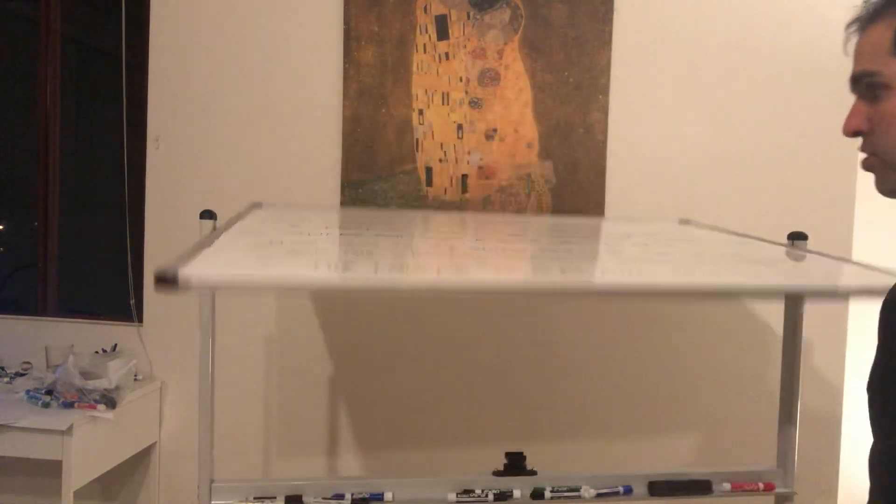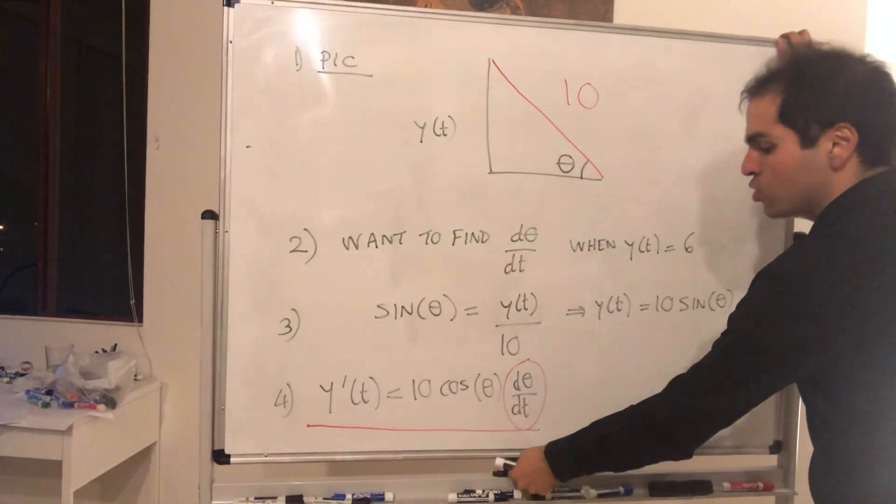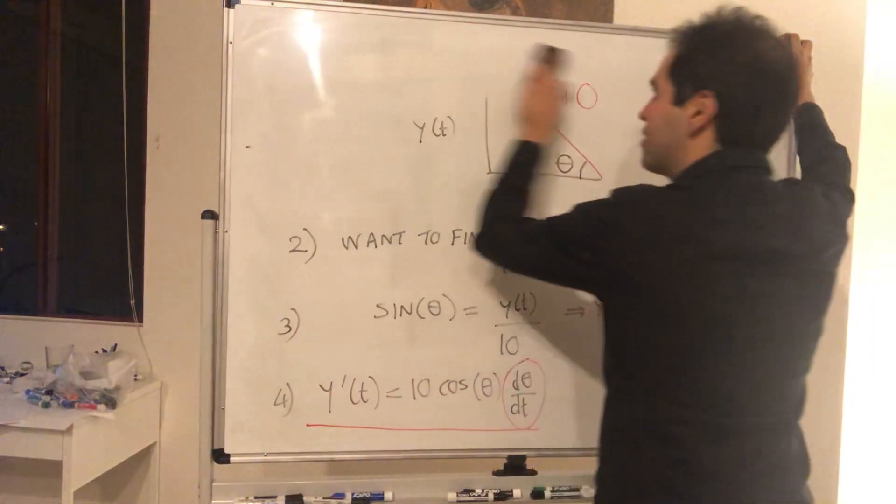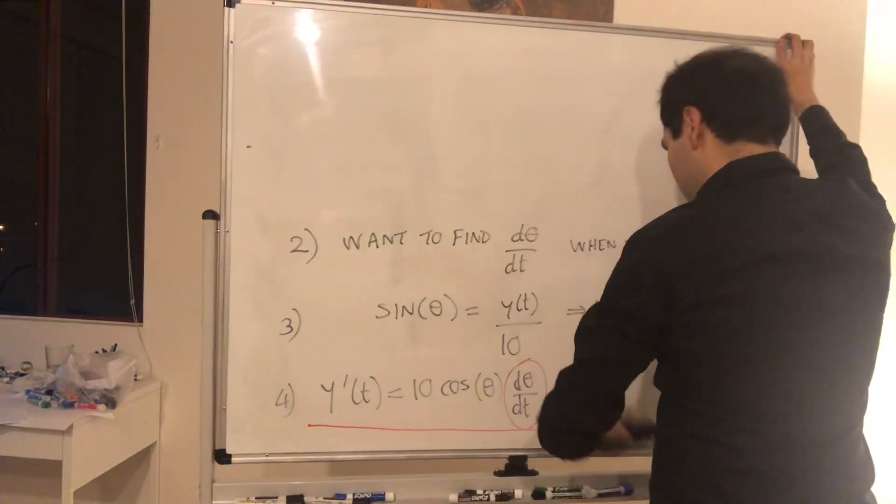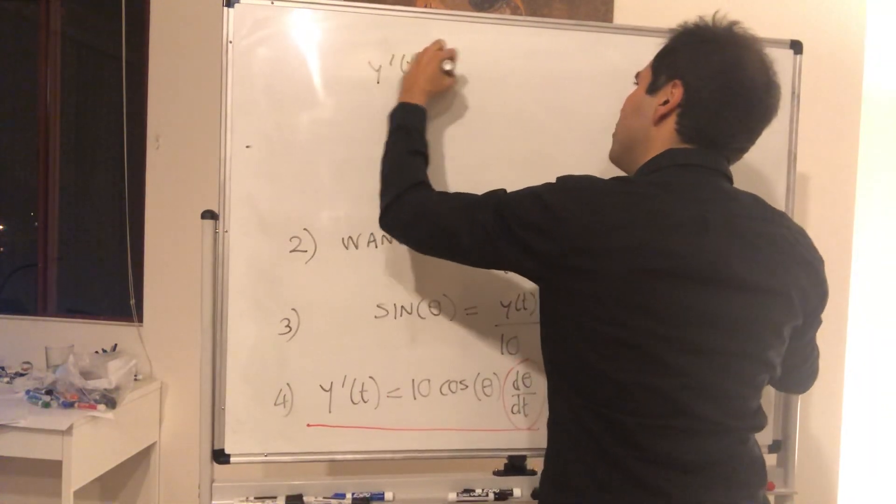So your first guess might be, okay, let y prime is just minus one, y prime is one. So you might guess y prime of t is one.